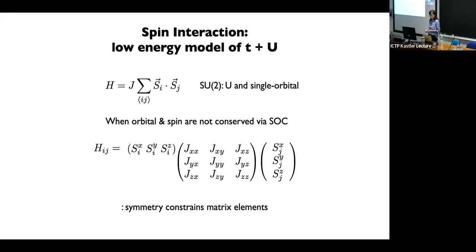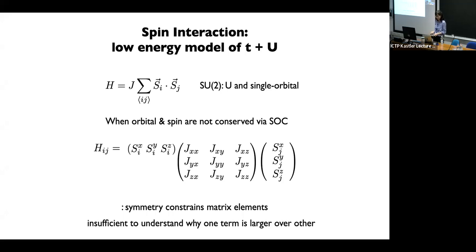When orbital angular momentum as well as spins are entangled due to spin-orbit coupling, we have a general form of the Hamiltonian written in terms of a three-by-three matrix. The symmetry of the model constrains the matrix elements because the whole thing—some are allowed by the symmetry of the lattice—will restrict which parts of the matrix elements are finite and which are zero. They are not sufficient to understand why one term is larger over the other, so we'll have to go through some microscopics to tell under what condition a certain interaction becomes dominant. That's why we are working on this microscopic theory.